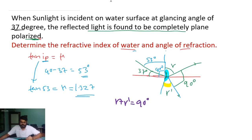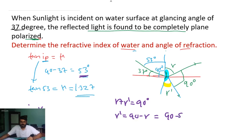So r plus r prime equals 90 degrees, meaning r prime equals 90 minus r. Since the angle of incidence equals the angle of reflection, r equals 53 degrees. Therefore r prime equals 90 minus 53, which is 37 degrees. So the angle of refraction is 37 degrees.